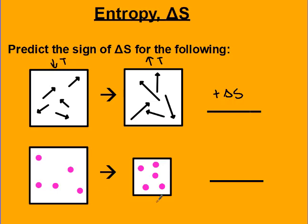And then in this bottom one, we have a decrease in volume. If the volume decreases, there are fewer places that the atoms can go, which means it must have a decrease in delta S, because there are going to be fewer microstates as the gas is less dispersed.